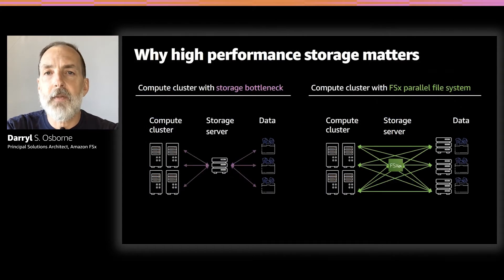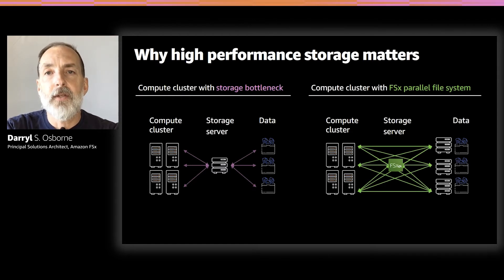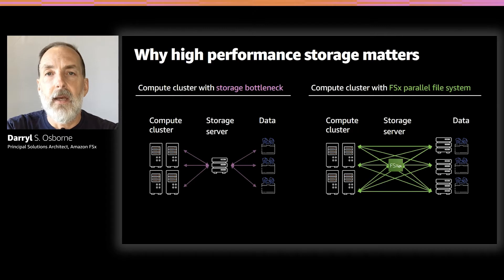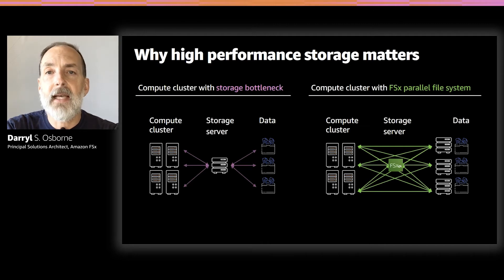So what do these use cases have in common? They typically have a large dataset that needs to be processed by applications geared for big data analytics, machine learning, and high-performance computing — all of which need high-performance storage. One of the benefits of cloud computing is the ability to process massive amounts of data in parallel using elastic compute resources. Without sufficient storage performance, compute resources are left idle, waiting for data. High-performance storage prevents bottlenecks so you can reduce workload runtimes, accelerate business insights, and save compute costs.